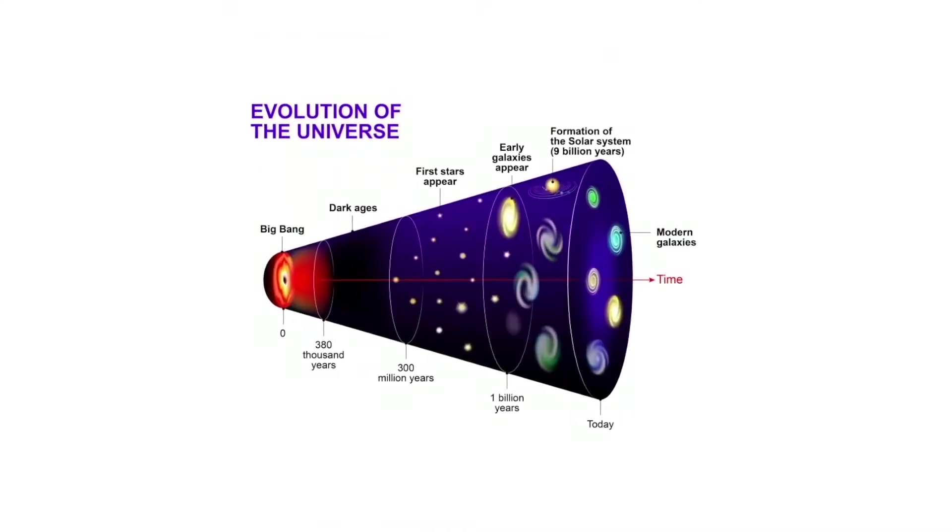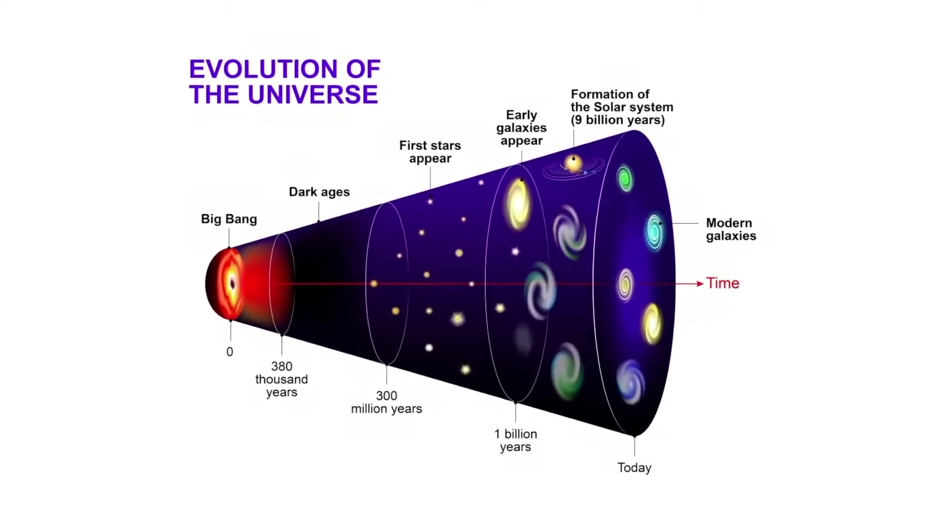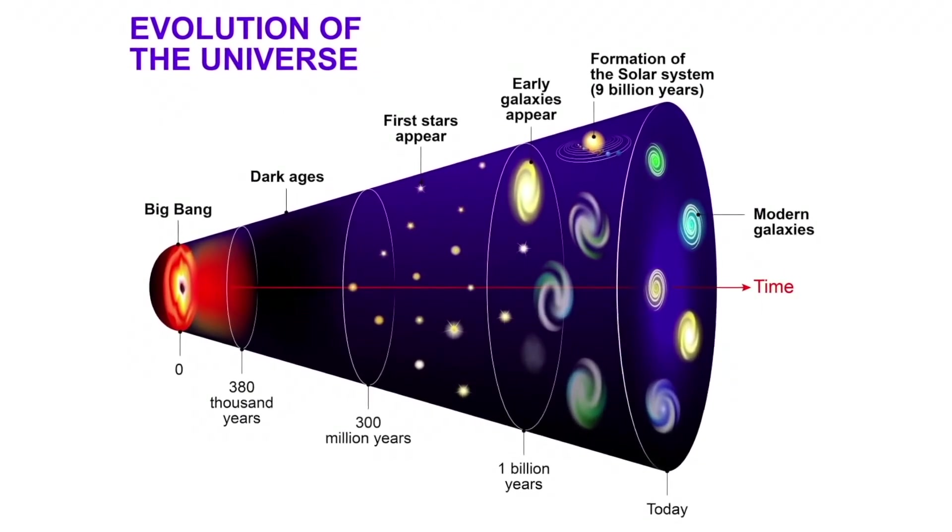After the universe became transparent, it was still incredibly dark. In fact, this period of the universe's life is known as the Cosmic Dark Ages, that would last until the first stars formed.